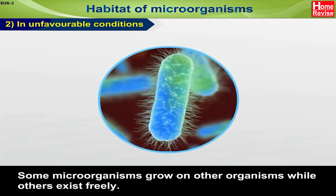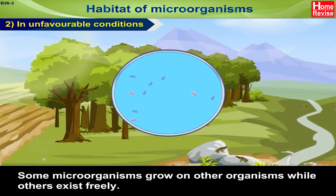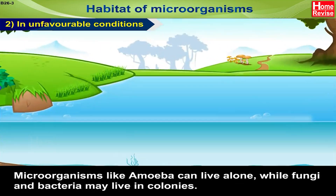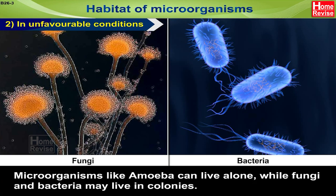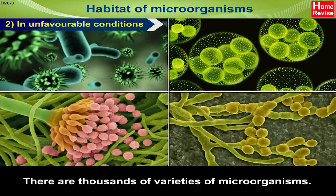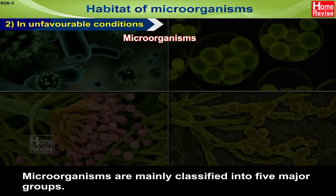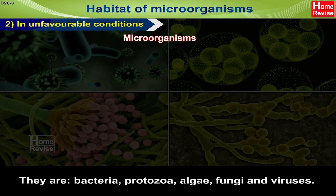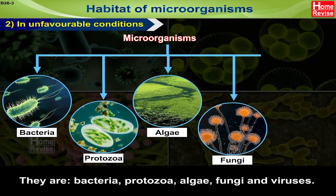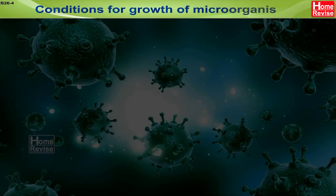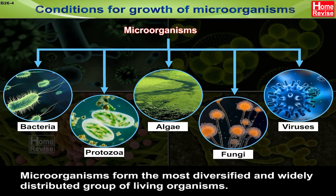Some micro-organisms grow on other organisms while others exist freely. Micro-organisms like amoeba can live alone while fungi and bacteria may live in colonies. There are thousands of varieties of micro-organisms. Micro-organisms are mainly classified into five major groups: Bacteria, Protozoa, Algae, Fungi and Viruses. They form the most diversified and widely distributed group of living organisms.